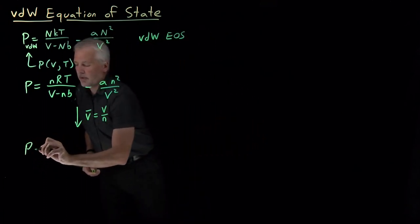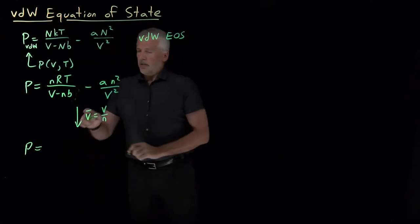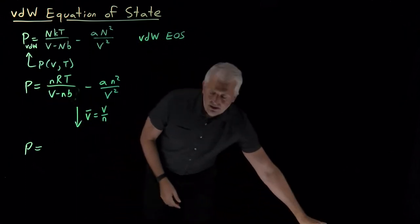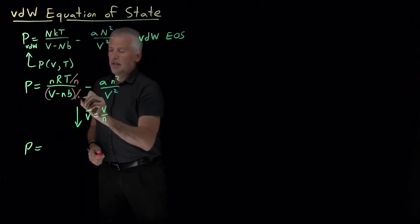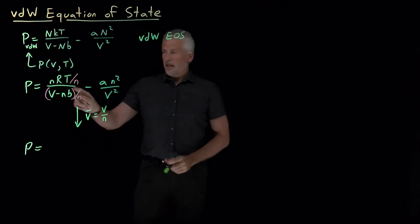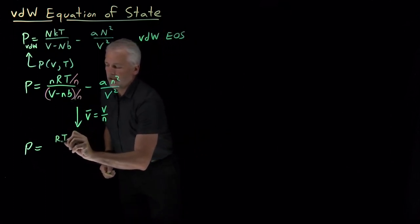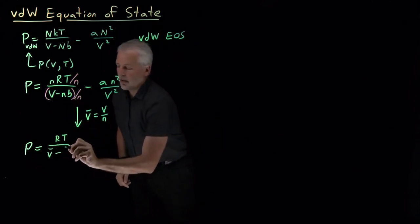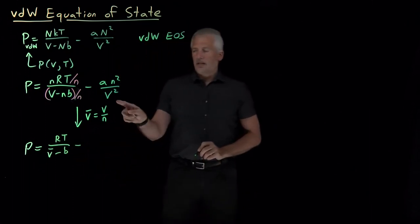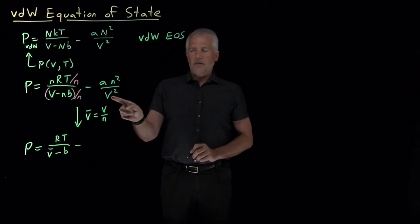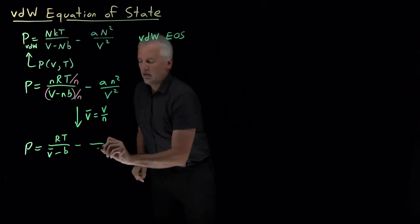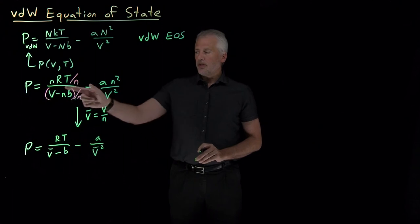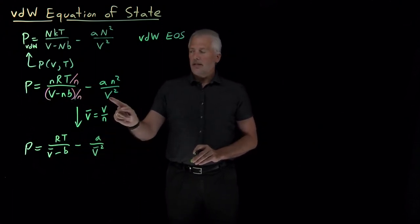I can write the pressure in molar terms. If I divide numerator and denominator of the first term by N, the N in the numerator cancels. V divided by N becomes V-bar in the denominator, and NB divided by N becomes just B in the denominator. In the second term, I have V squared under N squared, so that becomes V-bar squared in the denominator, with A on top. So I've rewritten this equation in terms of molar volumes rather than extensive volumes.